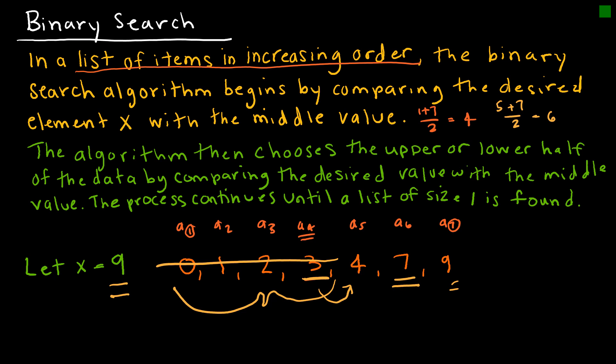Five plus seven divided by two gives us six, so we compare the value at a sub six, which is seven, to our desired value of nine. Nine is greater than seven, so this tells us the left endpoint becomes seven and the right endpoint is also seven — we now have a list of size one. Because the value at that position is nine, the output is the location of the solution, which is the seventh position. If the value had not been nine, the output would have been zero.